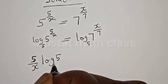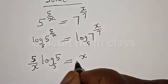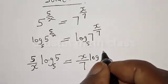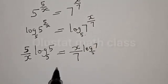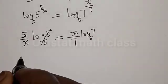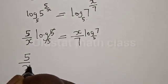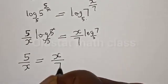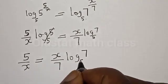Then we have 5 divided by x, times log 5 base 5, is equal to x divided by 7 times log 7 base 5. Now log 5 base 5 equals 1, so we cancel this. We have 5 divided by x is equal to x divided by 7 times log 7 base 5.